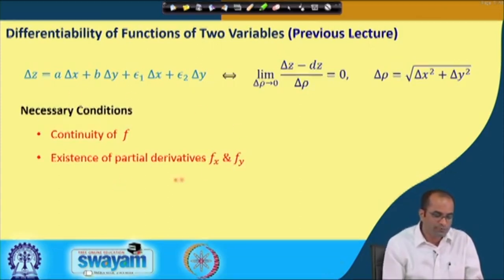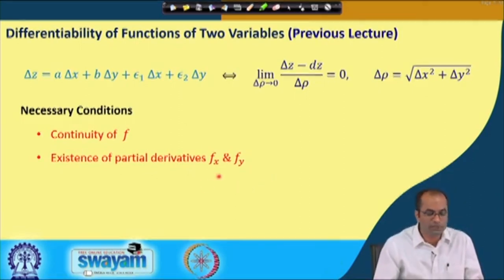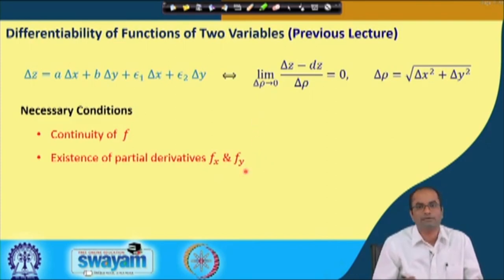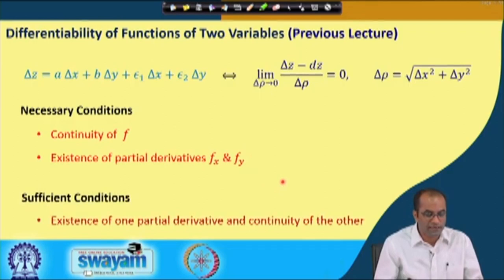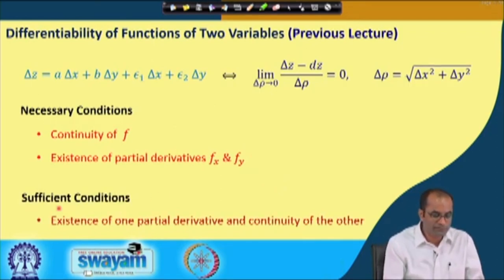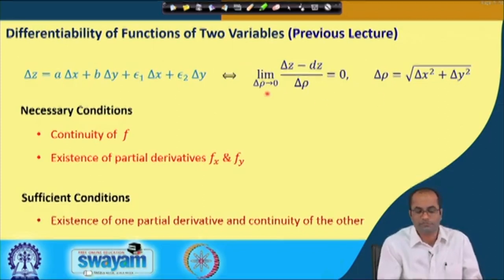We also observed that necessary conditions are important: if the function is not continuous, or the partial derivatives do not exist, we can immediately conclude the function is not differentiable, since these are necessary conditions for differentiability. We also observed the importance of sufficient conditions — if we show continuity of one of the partial derivatives, we can conclude the function is differentiable without using the definitions directly.